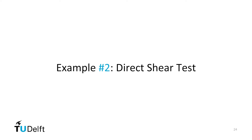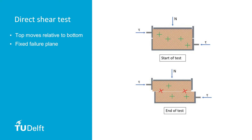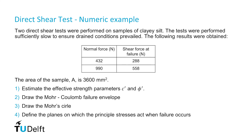Now we continue to example number two. The direct shear box is a simple apparatus in which the top half can move relative to the bottom half. During the test, different vertical stresses can be applied. The principal stresses are aligned with the vertical and horizontal stresses at the start of the test, but they rotate during the test. The failure plane of the soil is fixed because of the box — this plane is in the middle of the box. A key difference from the triaxial test is that here there is a fixed failure plane, whereas for a triaxial test the failure plane is not defined beforehand. We will explain how to draw a Mohr circle for the direct shear test and define the planes at which the principal stresses act when failure occurs.